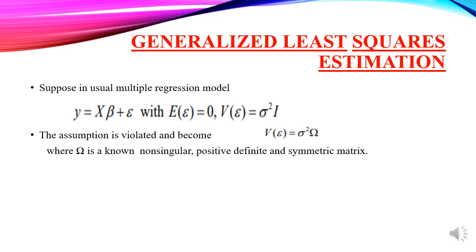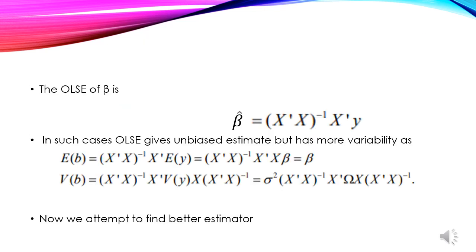We have the variance of epsilon equal to sigma squared times omega, where omega is a non-singular, positive definite, and symmetric matrix. We take the Ordinary Least Squares estimator of beta: beta hat equals (X'X)⁻¹X'Y. Then expectation of beta hat equals beta, and variance of beta hat equals sigma squared (X'X)⁻¹ X'ΩX (X'X)⁻¹.